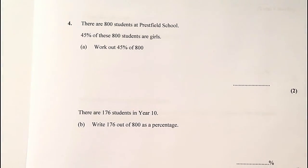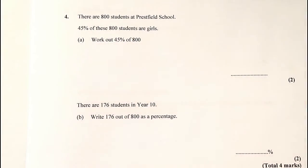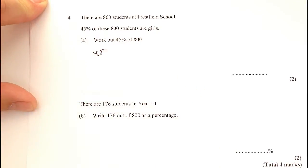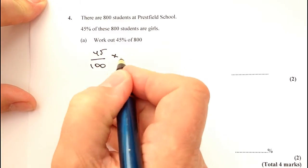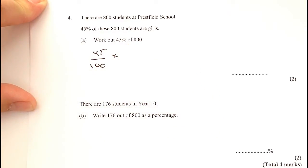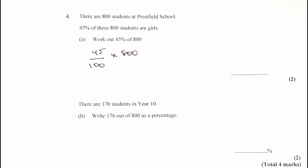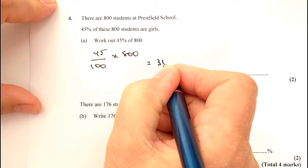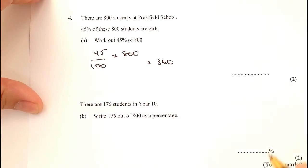On to question four. 800 students at Pressfield School — 45% of these students are girls. Work out 45% of 800. All you're trying to do is simply answer this question: 45% is exactly the same as saying 45 out of 100, and we're going to multiply that — remember, 'of' in maths means multiply — by 800. Plug that into the calculator and you should come out with 360. So 45% of 800 is 360.